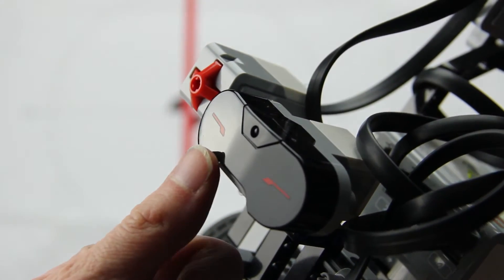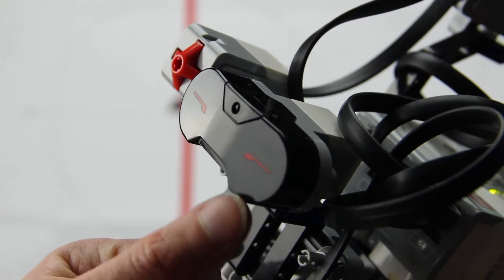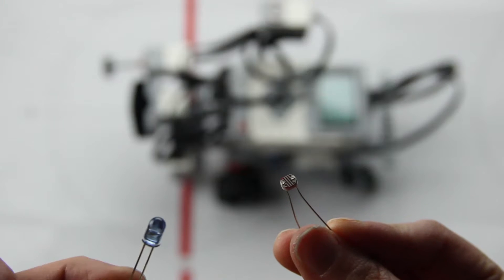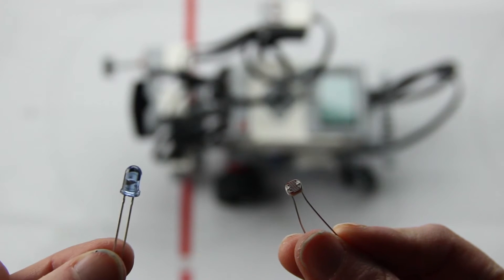Our sensor has both a transmitter and a receiver in this case, which is why it looks like eyes. One side emits light and the other side looks to see how much light is reflected.